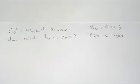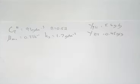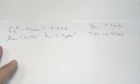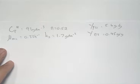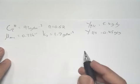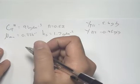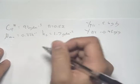Question 4 deals with inhibited cell growth with product inhibition. For product inhibition, the rate law takes the following form.